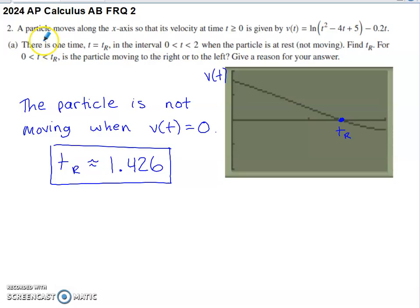This version of number two says a particle moves along the x-axis so its velocity for times that are positive is given by this function. Part A says there's one time t sub r on the interval zero to two when the particle is at rest or not moving. Find t sub r. For the interval zero to t sub r, is the particle moving to the left or to the right? Give a reason for your answer.